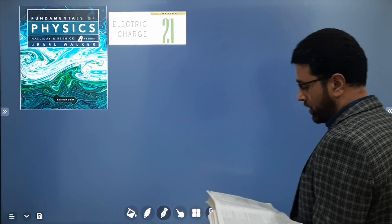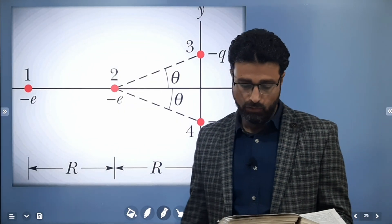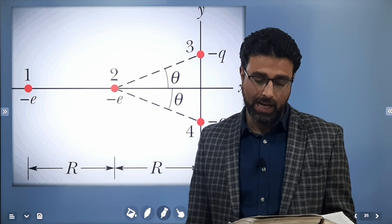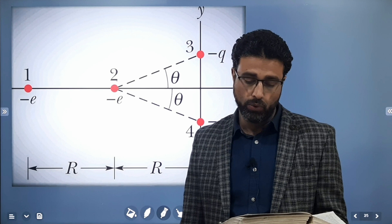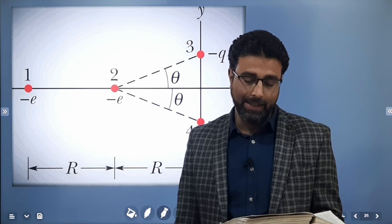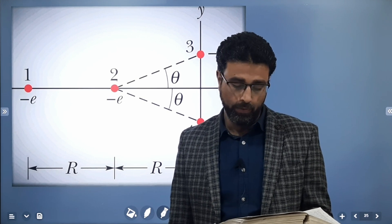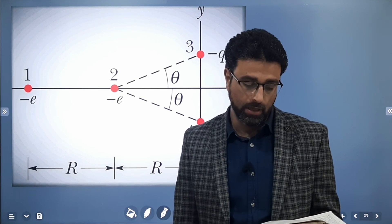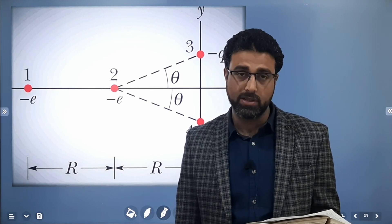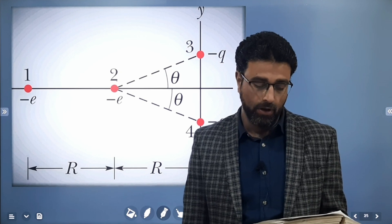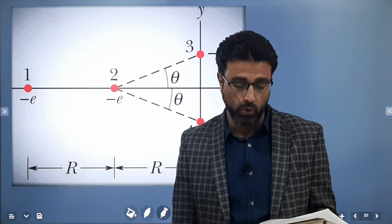The figure shows electrons 1 and 2 on an x-axis, and charged ions 3 and 4 of identical charge minus q, and at identical angles theta. Electron 2 is free to move, and the other 3 particles are fixed in place at horizontal distances R from electron 2, and are intended to hold electron 2 in place.